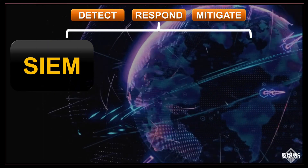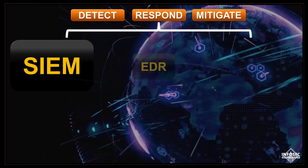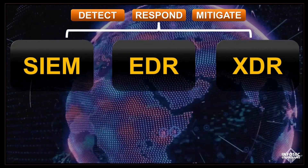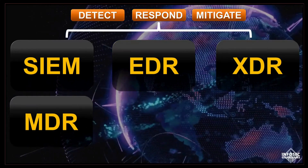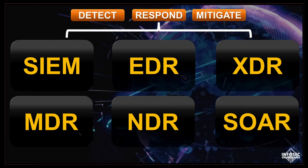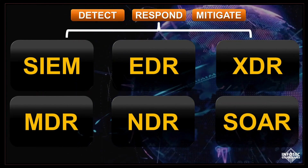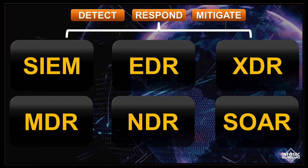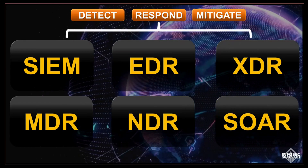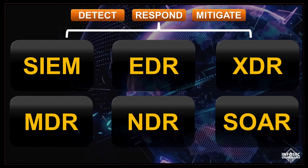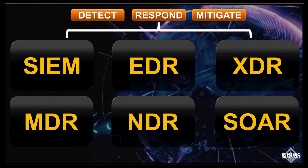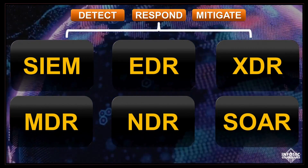Among these, SIEM (Security Information and Event Management), EDR (Endpoint Detection and Response), XDR (Extended Detection and Response), MDR (Managed Detection and Response), NDR (Network Detection and Response), and SOAR (Security Orchestration, Automation, and Response) stand as pillars of defense against the myriad forms of cyber attacks. Each of these technologies plays a distinct role in fortifying an organization's cybersecurity posture, offering unique capabilities tailored to address specific challenges in the ever-evolving threat landscape.